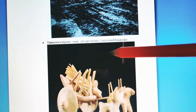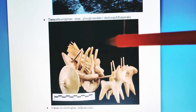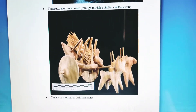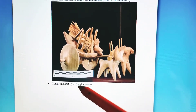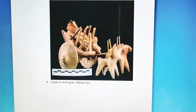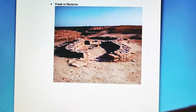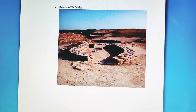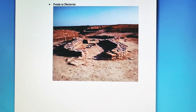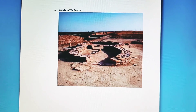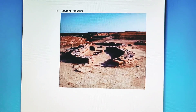The terracotta model of oxen tells us that harvesting and transportation were taking place. Canals at Shortugai inform us about irrigation practices, and ponds at Dholavira served as another irrigation method. This makes it very clear that farming, hunting, gathering, and fishing are the four important subsistence strategies used by Indus Valley people to sustain their lives.